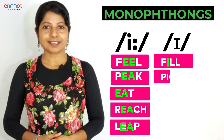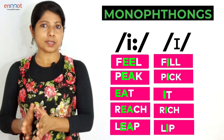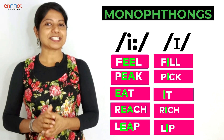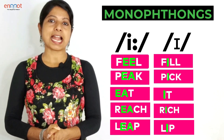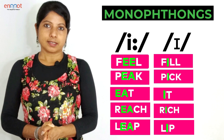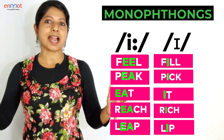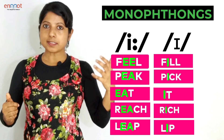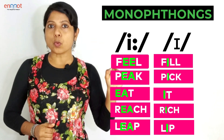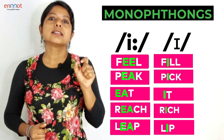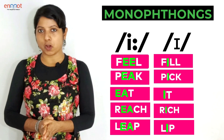The next monophthong is /ɪ/ and the words are: feel, pick, it, rich, and lip. Now, monophthongs are further divided into long vowels and short vowels. The first sound /iː/ is a long vowel and /ɪ/ is a short vowel.